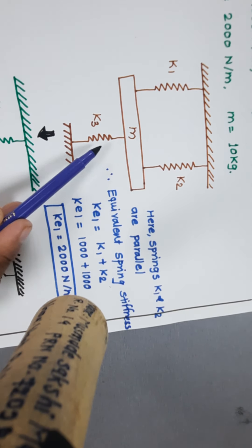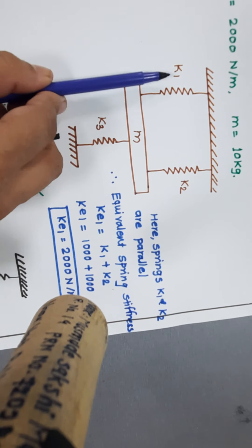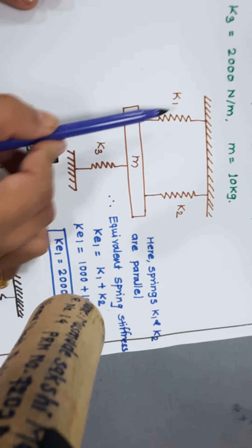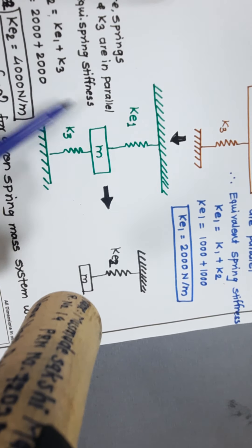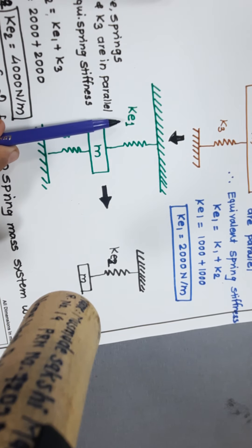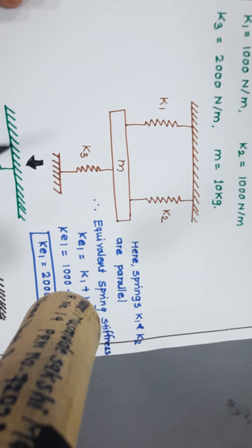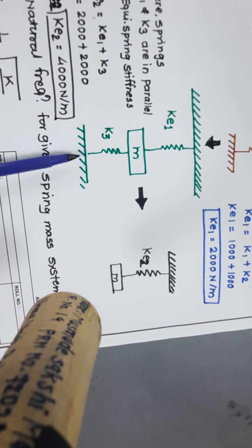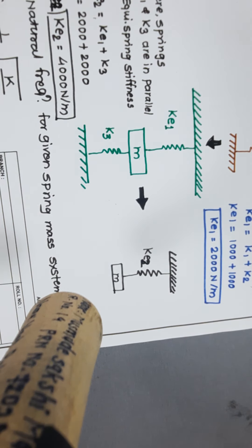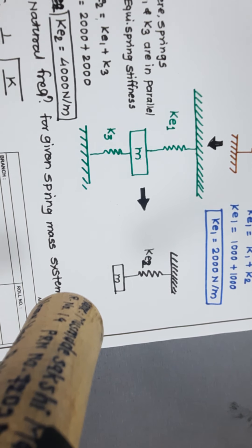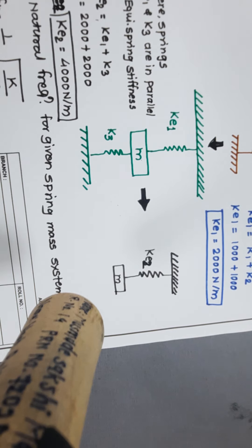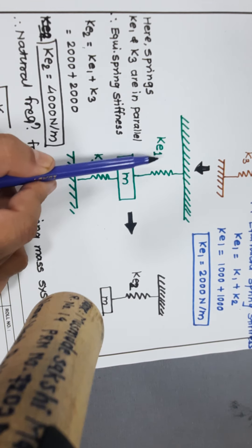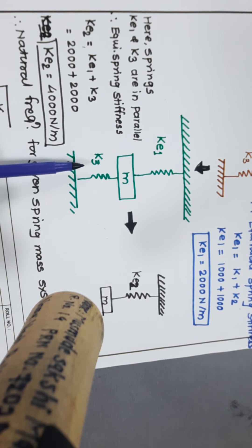We convert the first diagram into a new equivalent diagram by replacing k1 and k2 with the equivalent spring ke1. Now, in this new diagram, ke1 and k3 are also in parallel because one end of each is attached to the fixed surface and the other end to mass m.